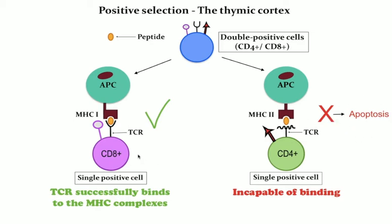If, however, a T-cell's TCR successfully binds to the MHC complexes on the thymic cells, the T-cell receives survival signals and is thus positively selected. This process ensures that selected T-cells will have an MHC affinity that can serve useful functions in the body. The vast majority of developing thymocytes will die during this process.